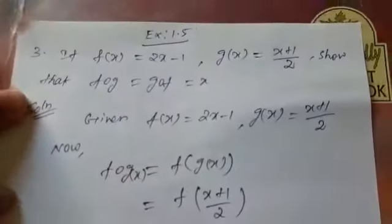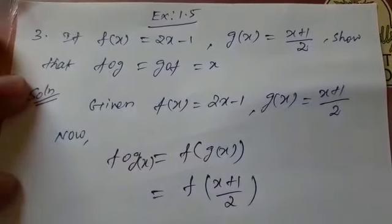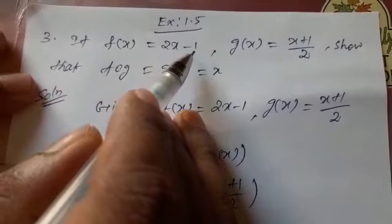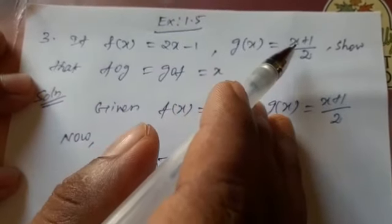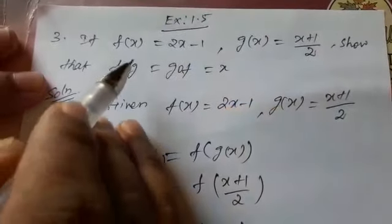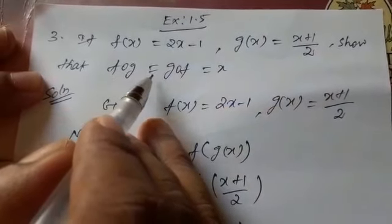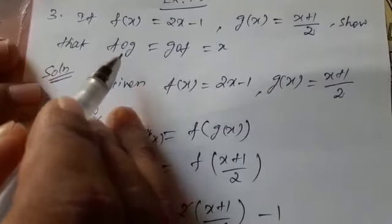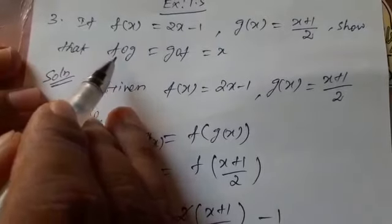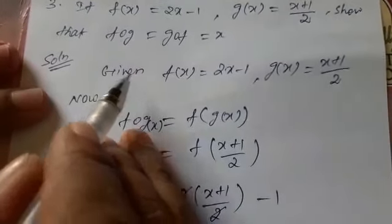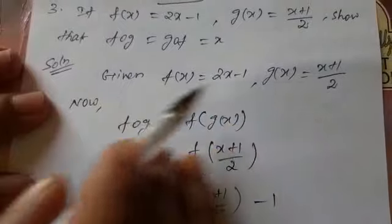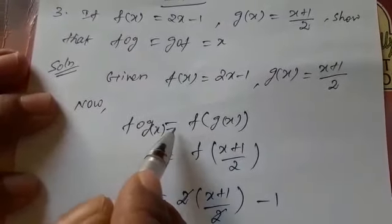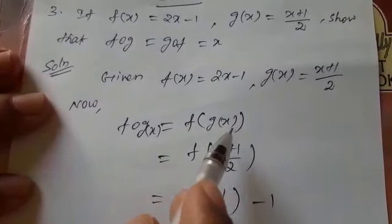Exercise 1.5, third sum. If f(x) = 2x − 1 and g(x) = (x + 1)/2, show that f∘g = g∘f = x — this is a composite function. I already told you this in the last class as a two-mark problem. We will find f∘g(x) first as a condition.